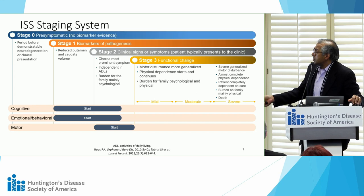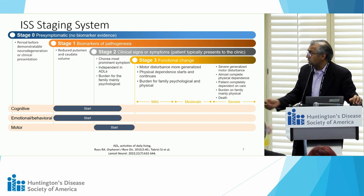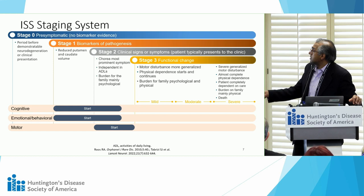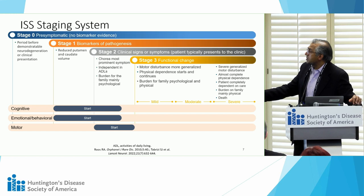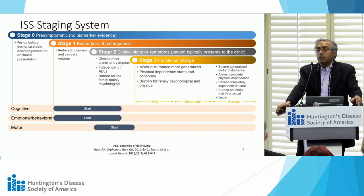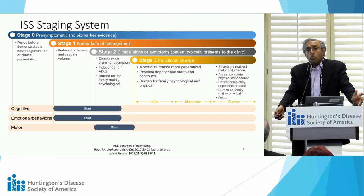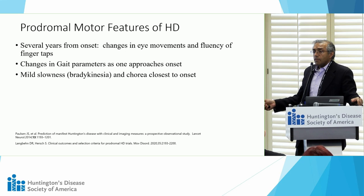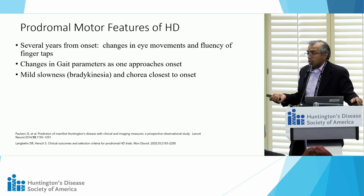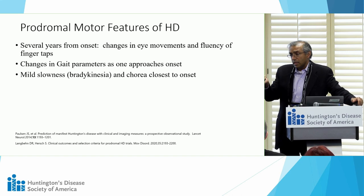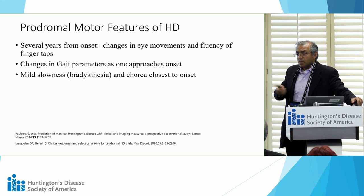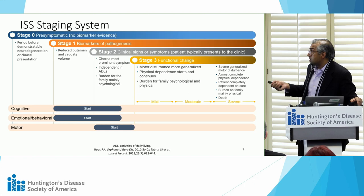The ISS system also includes a biomarker-positive stage where somebody has imaging or fluid biomarker findings; stage two where the patient is still independent in day-to-day activities but may have some cognitive or behavioral problems along with motor symptoms; and stage three when the patient begins to lose independence and becomes increasingly dependent on help. Interestingly, even in the biomarker stage, if you carefully measure speed of movement — finger tapping, walking, or sustained postures — you can detect subtle motor findings quantitatively several years before symptoms are apparent on examination.